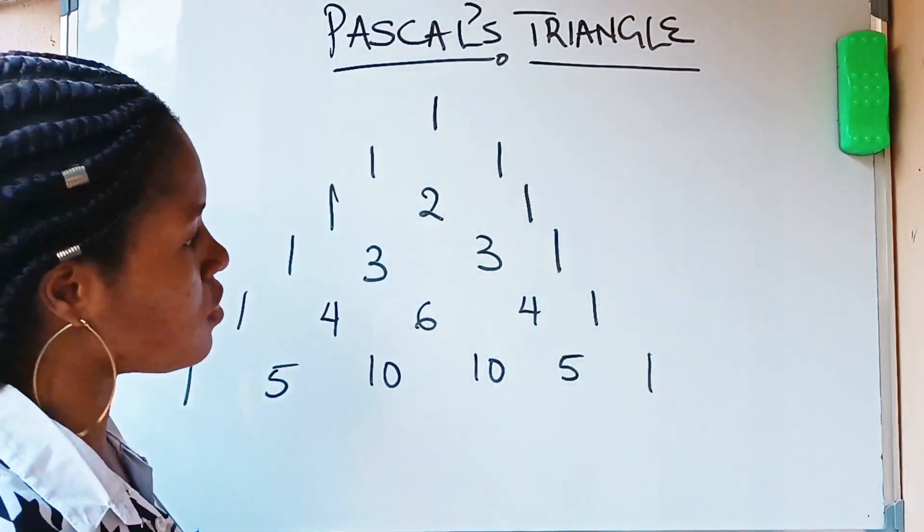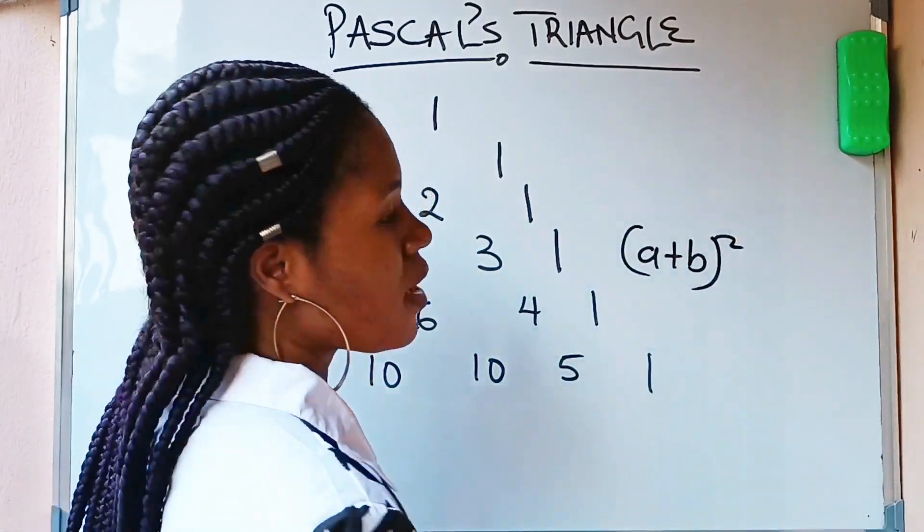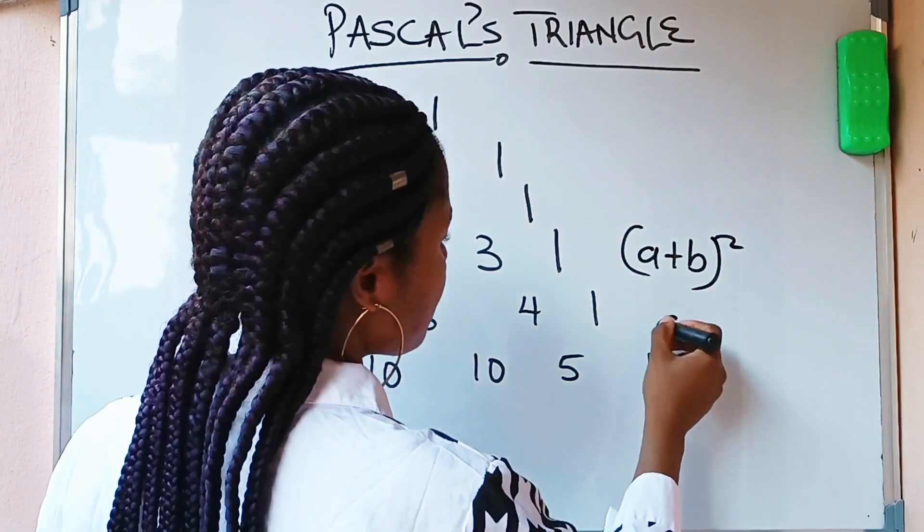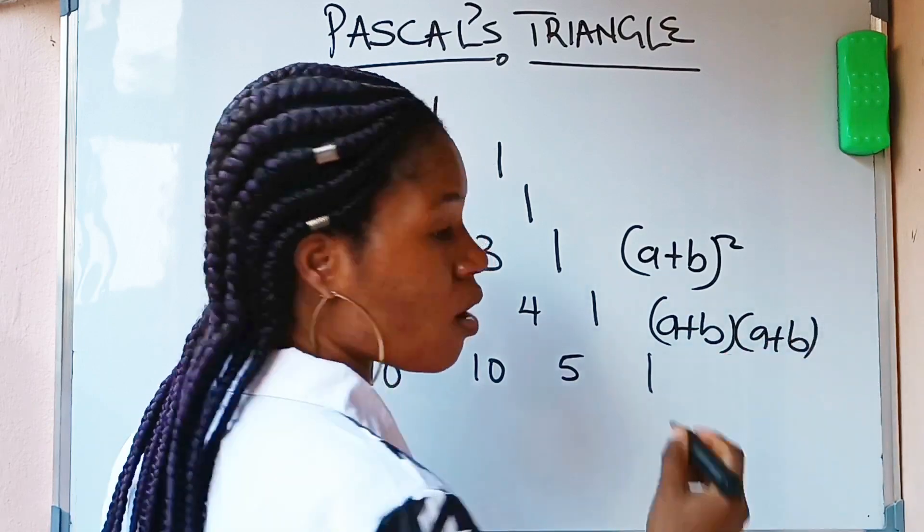For example, you know that when you are told A plus B all squared, it is easy for you to expand it like this: A plus B into A plus B.